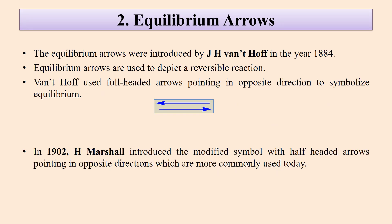Next is the equilibrium arrow. The equilibrium arrows were introduced by J. H. Warnthoff in the year 1884. They are used to depict a reversible reaction. Warnthoff used full-headed arrows pointing in opposite directions to symbolize equilibrium. But in 1902, H. Marshall introduced a modified symbol with half-headed arrows pointing in opposite directions, which are commonly used today.